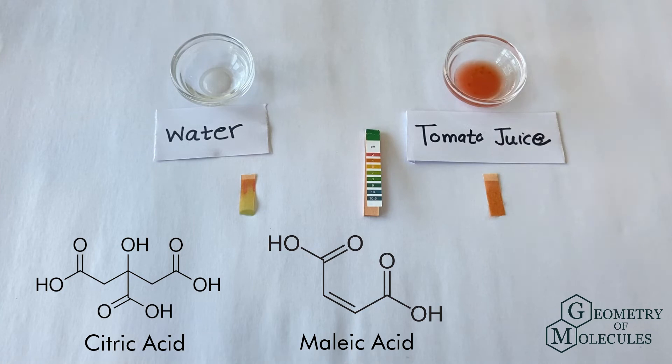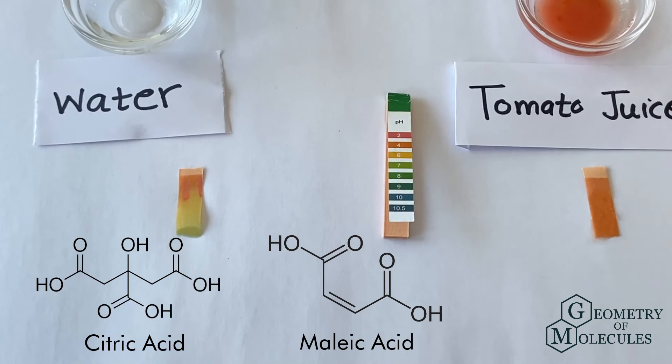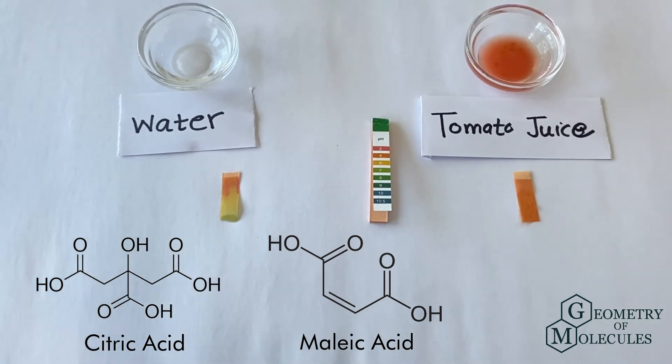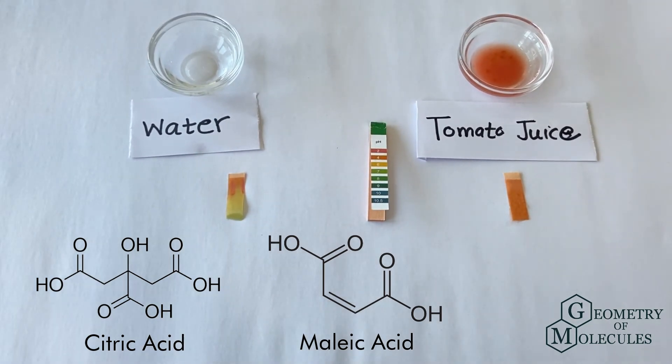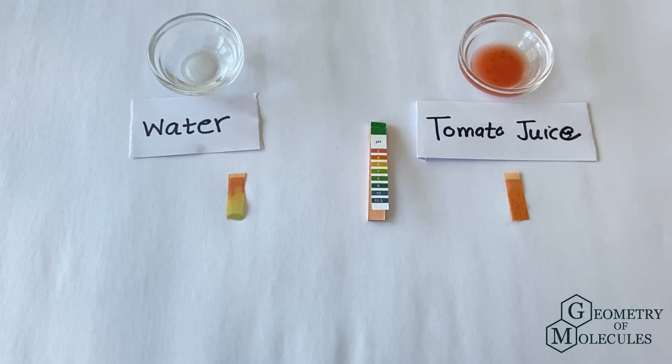As you can see, there are three carboxylic acid functional groups in citric acid and two in malic acid. That explains why tomato juice is acidic in nature. The amount of malic acid in tomato juice is almost half than that of citric acid.